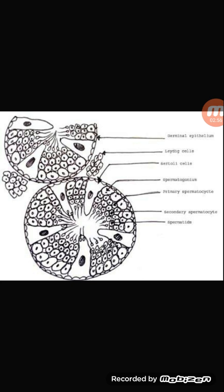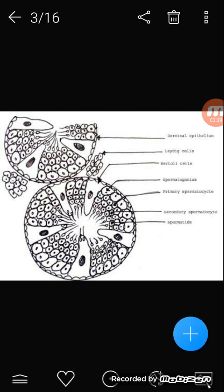The center of the diagram shows the lumen. The TS of testes also shows the various stages of sperm formation or spermatogenesis: spermatogonia, primary spermatocyte, secondary spermatocyte, spermatids, and sperm. In between two seminiferous tubules are clusters of cells called interstitial cells or cells of Leydig. These cells secrete the hormone testosterone after puberty, which is responsible for the development of secondary sexual characteristics in males.